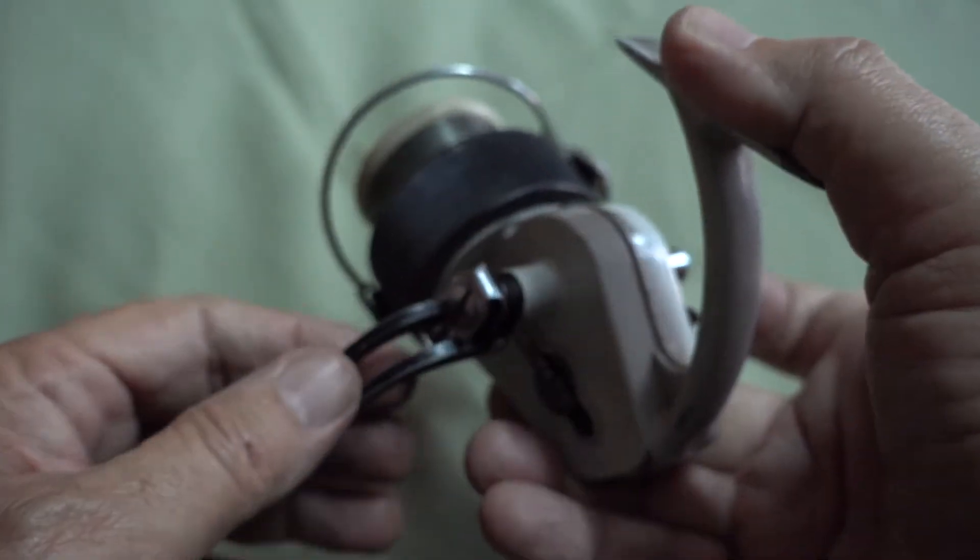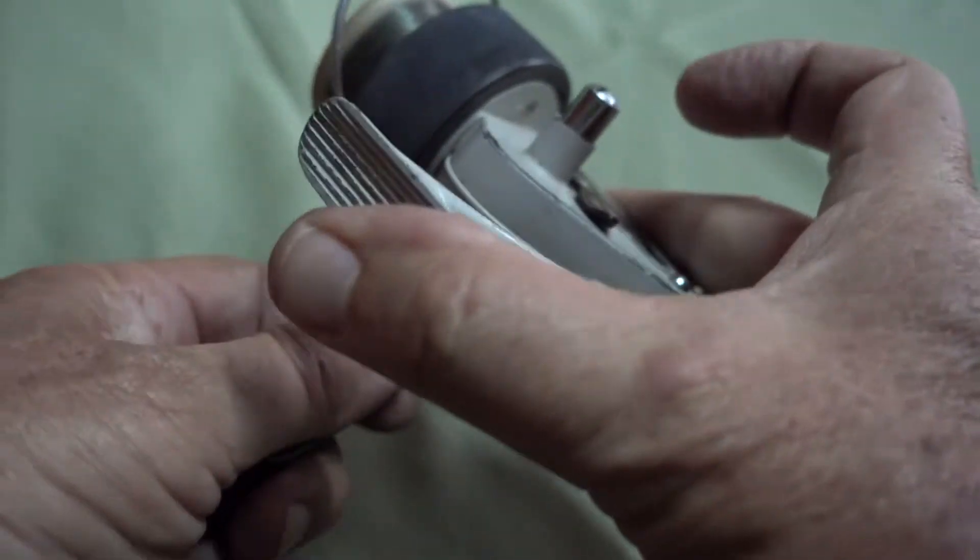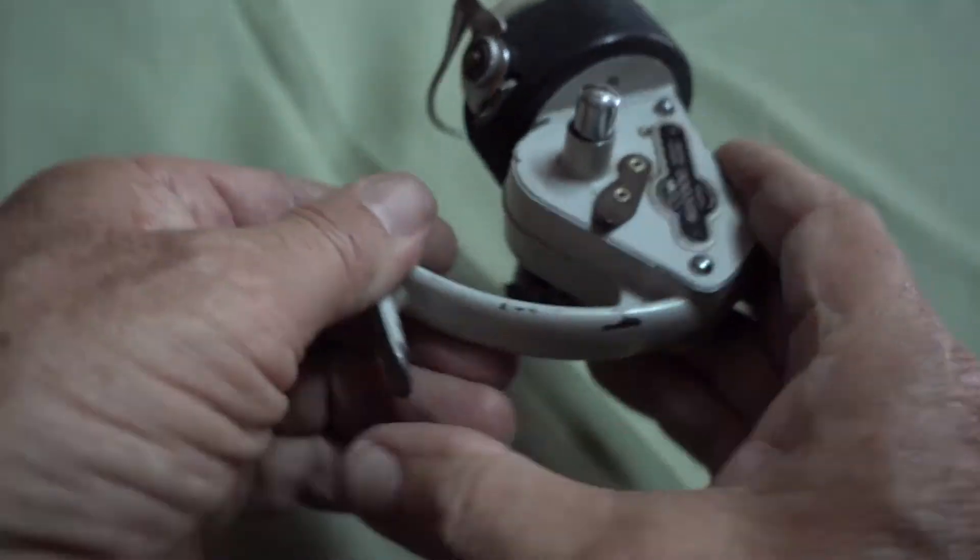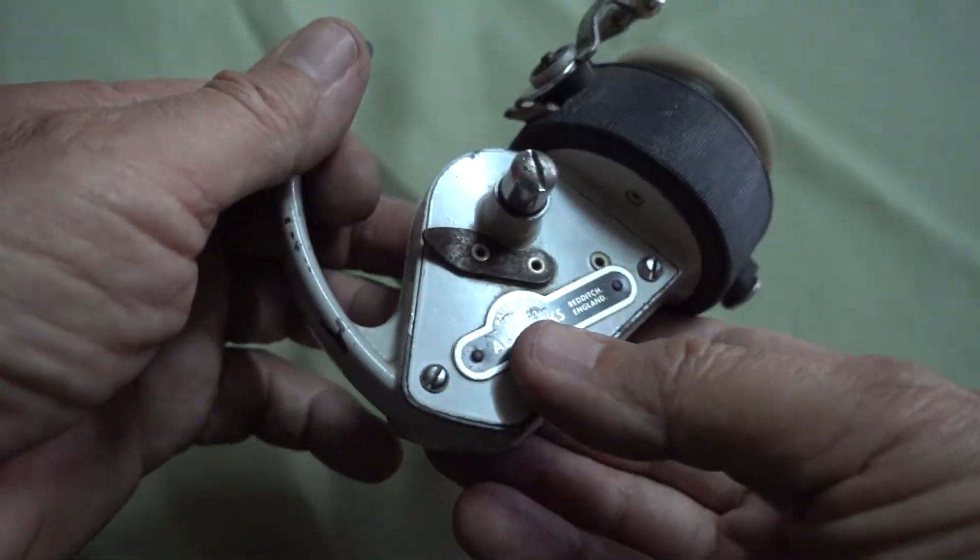This needs a bit of tender loving care and attention to get it smooth. Same swan neck, high body as the Mark VII.